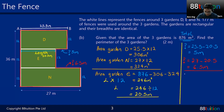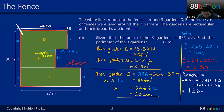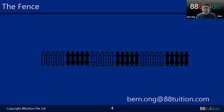Now find the perimeter — starting from one corner and working clockwise: 25.5 + 12 + 5 + 12 + 6.5 + 12 + 27 + 36 = 136 meters. That's the perimeter of the tree gardens! That's it for 'The Fence.' I'm Bern Ong from 88 Tuition — please subscribe, like, and check us out. Learn with Bern!